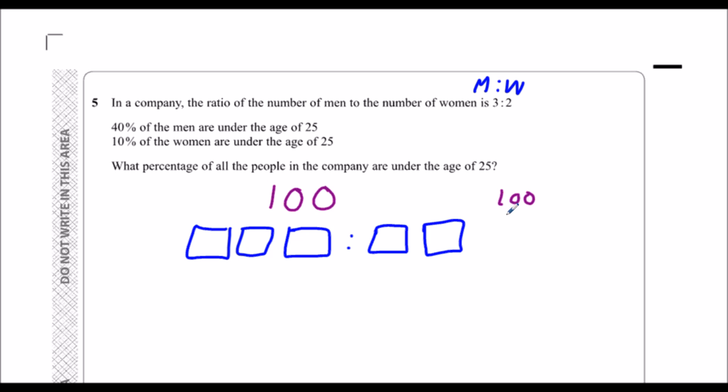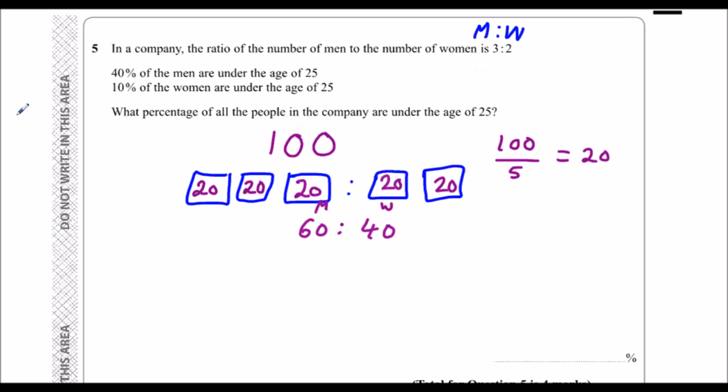So 100 divided by 5 is 20. So I'm going to put 20 in each one, each part is worth 20, which means I've got 60 to 40 and that's men to women from the top. So I've got 60% men, 40% women. So 60 men, 40 women.